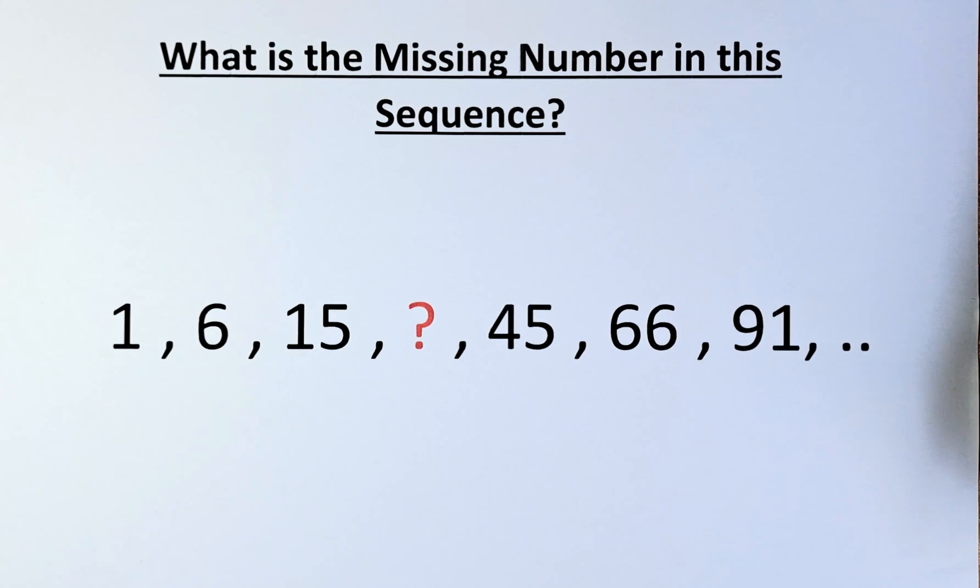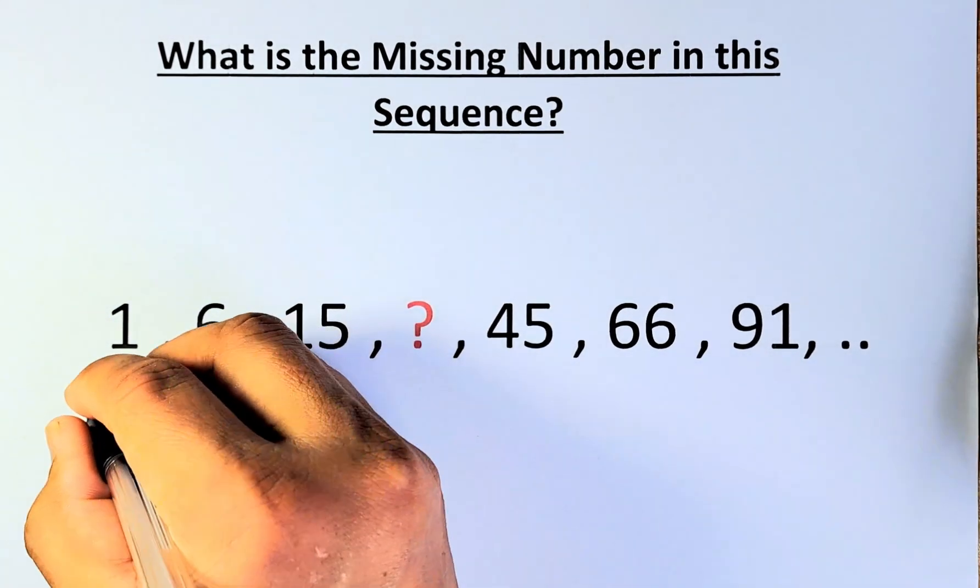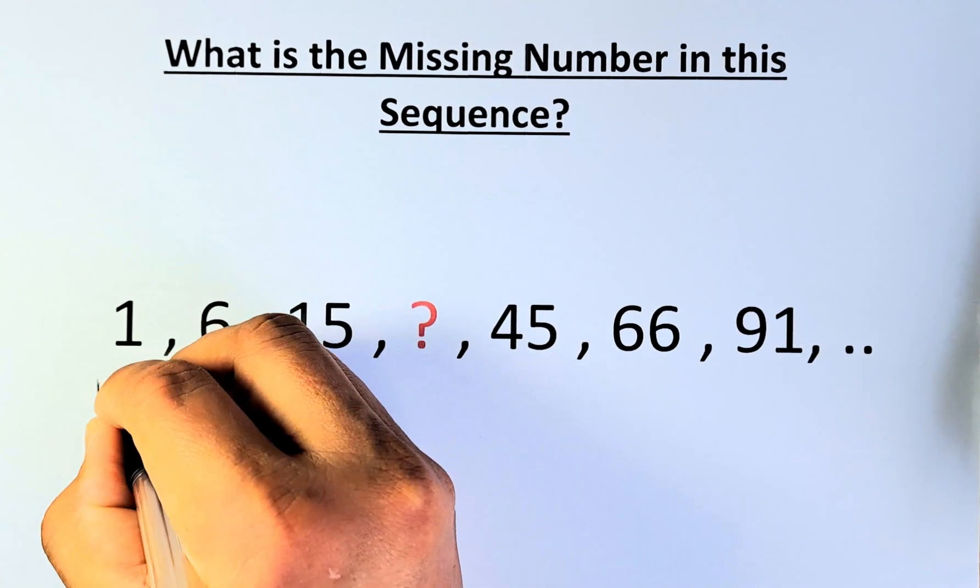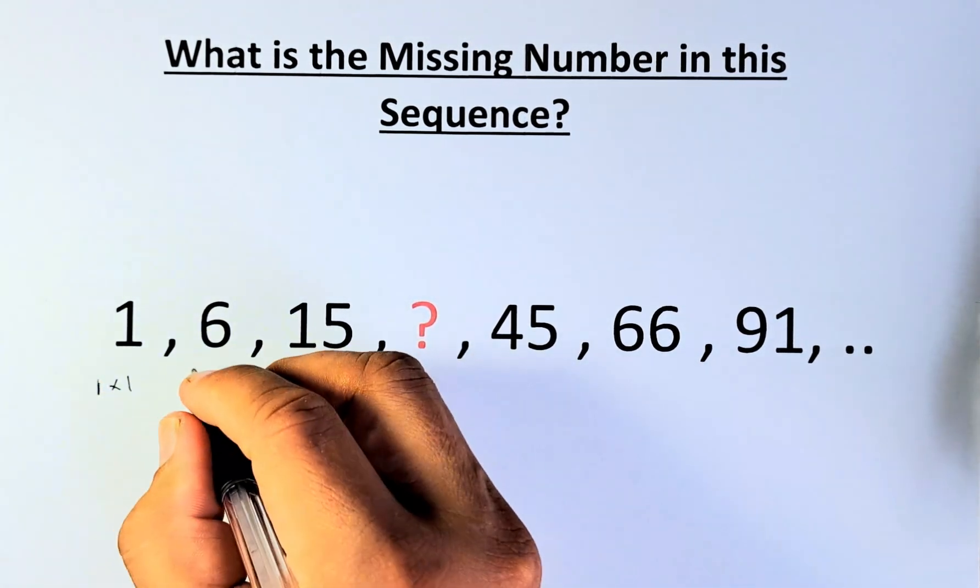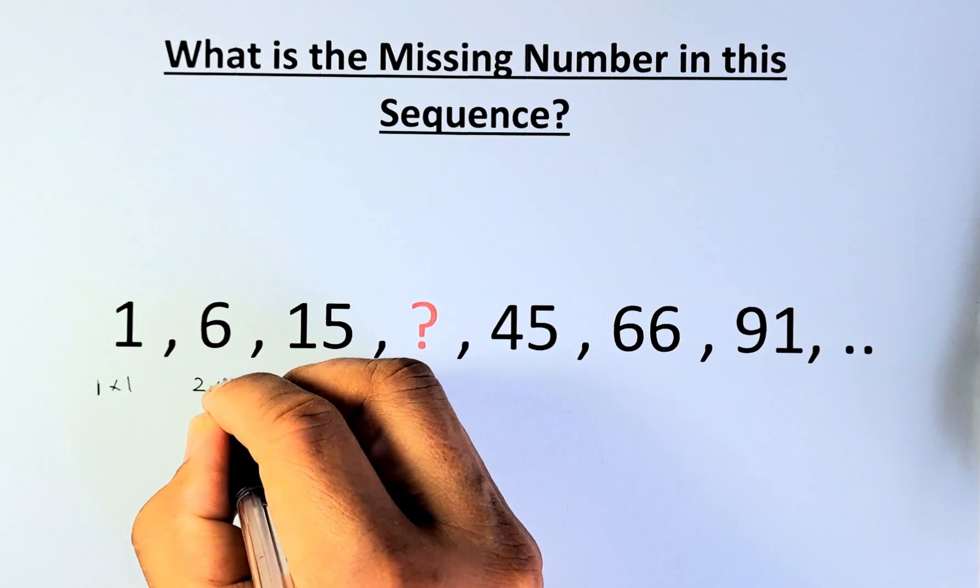The idea is that 1 is made up of 1 multiplied by 1, 6 is made up of 2 multiplied by 3, and 15 is made up of 3 multiplied by 5.